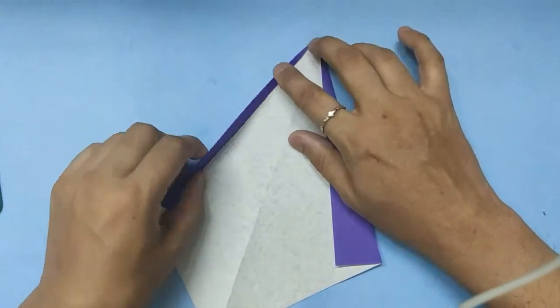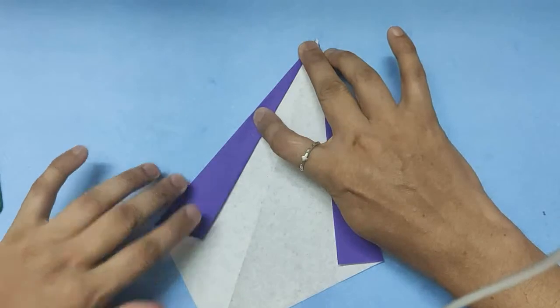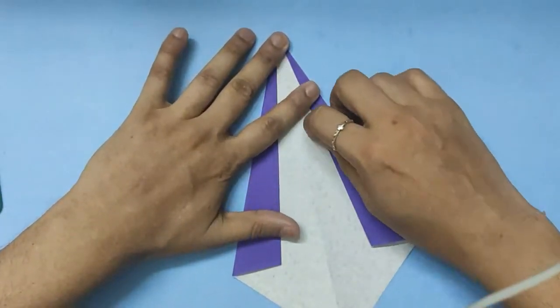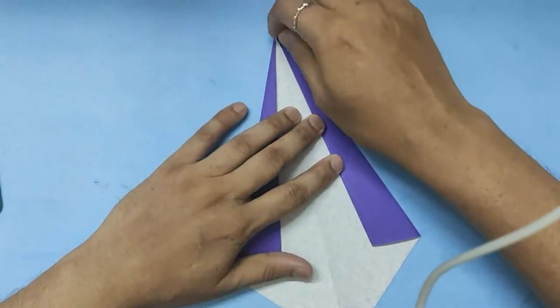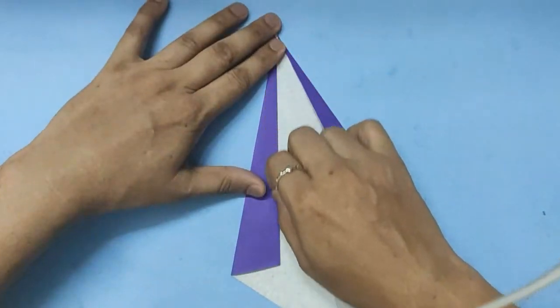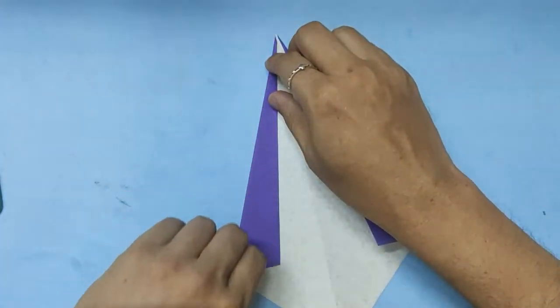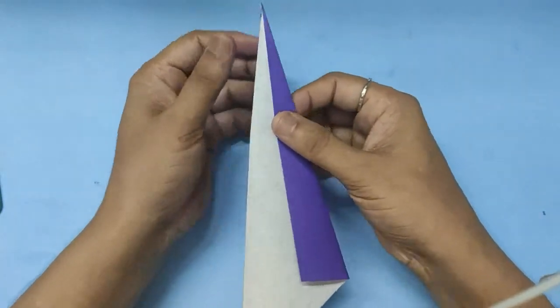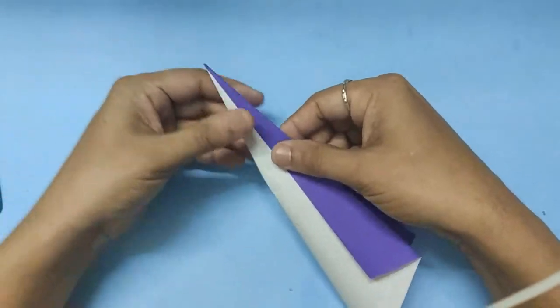Now fold it over that on both sides. Once you have done that, crease the folds well and fold the whole thing on the diagonal line backwards.